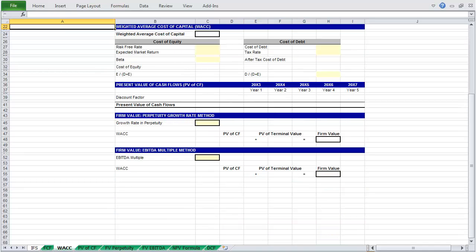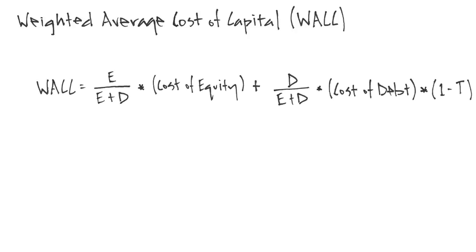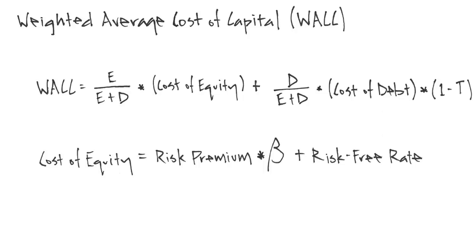The next step is to calculate our weighted average cost of capital. The formula for your weighted average cost of capital, or WACC, looks like this. It may appear complex, but all it's saying is that your cost of capital should be equivalent to the weighted average of your cost of equity and your cost of debt. This is simply the proportion of debt in your capital structure, and this is the proportion of equity in your capital structure. Your cost of equity is then calculated as the sum of your risk premium multiplied by a measure of volatility and your risk-free rate — concepts we discussed briefly in the video on the basic DCF. This is a topic that deserves more attention, and I plan to add material in reference. But in the meantime, let's focus on the model.